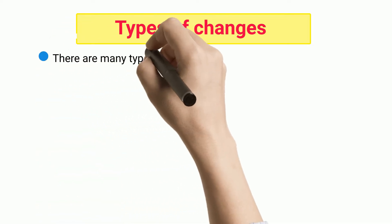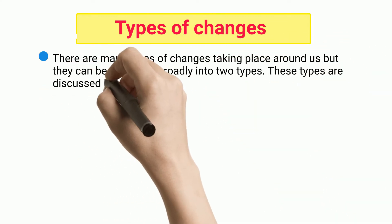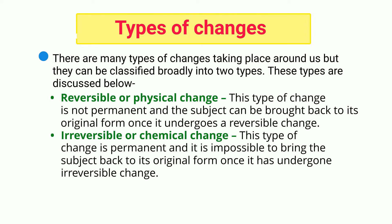Types of Changes. There are many types of changes taking place around us, but they can be classified broadly into two types. Reversible or Physical Change: this type of change is not permanent and the subject can be brought back to its original form once it undergoes a reversible change. Irreversible or Chemical Change: this type of change is permanent and it is impossible to bring the subject back to its original form once it has undergone irreversible change.